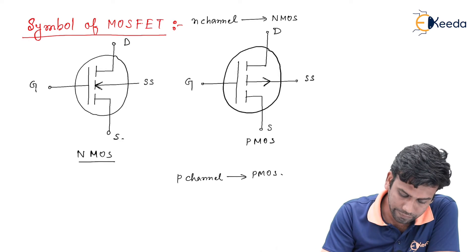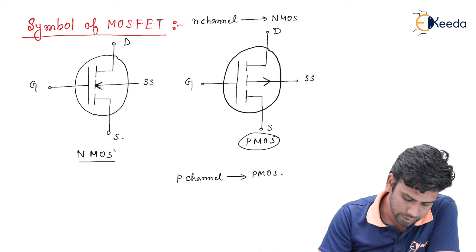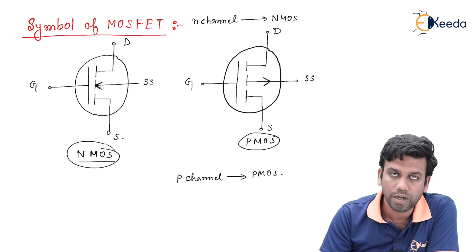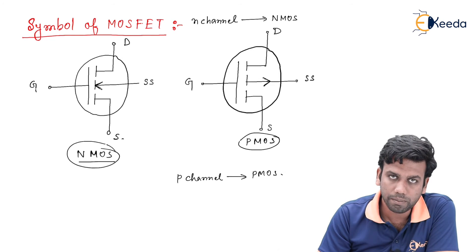This arrow sign, if it is outwards it will be P-MOS, if it is inwards it will be N-MOS. This is all about the symbols of E-only MOSFET. Thank you.